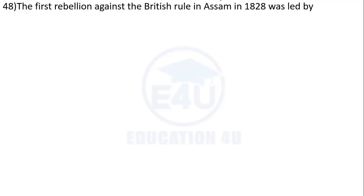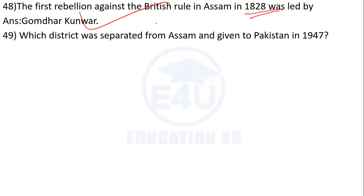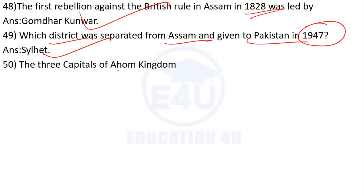The first rebellion against the British ruling Assam in 1828. Which district of Assam was separately given to Pakistan in 1947? The answer is Sylhet district of Assam.